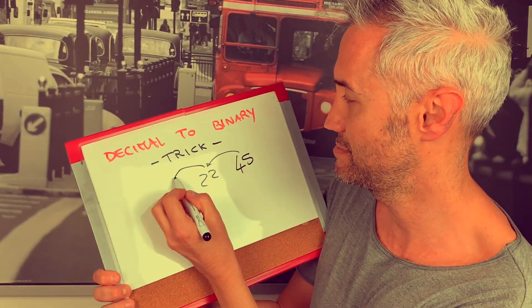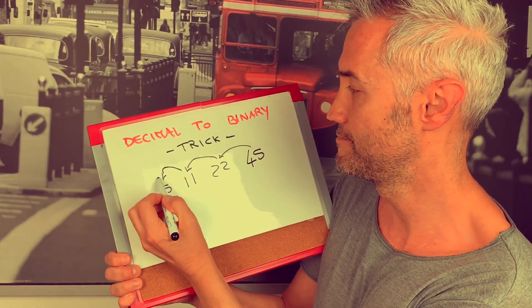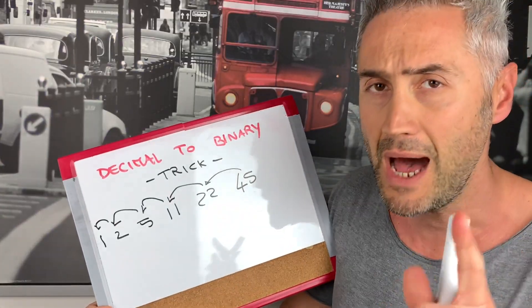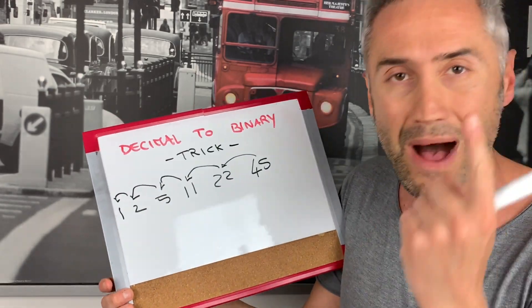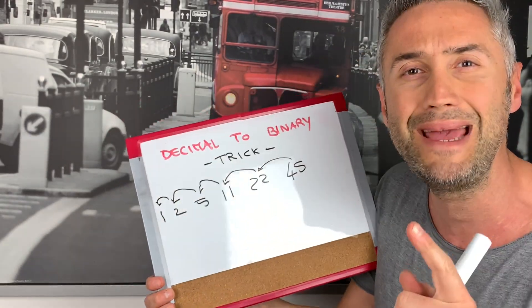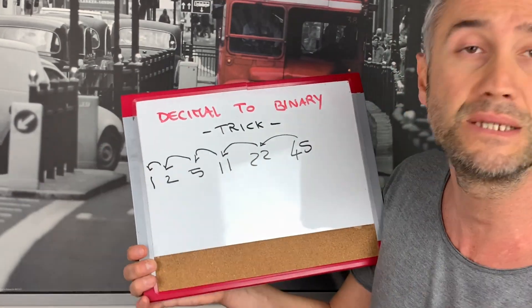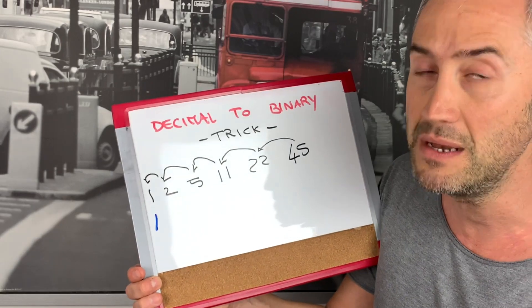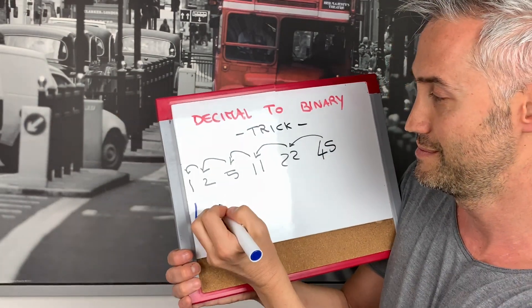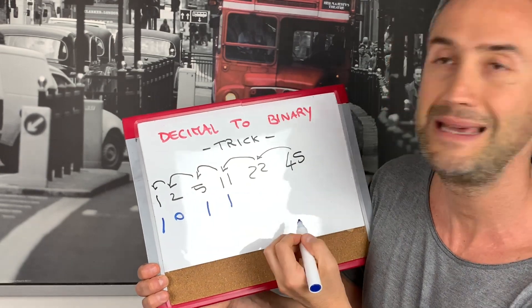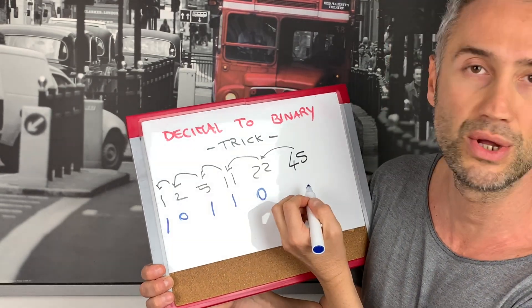Step 2: now we are going to write 1 below any odd number and 0 below any even number. 1 is odd — let's write 1. 2 is even — let's write 0. Then: odd, odd, even, odd.